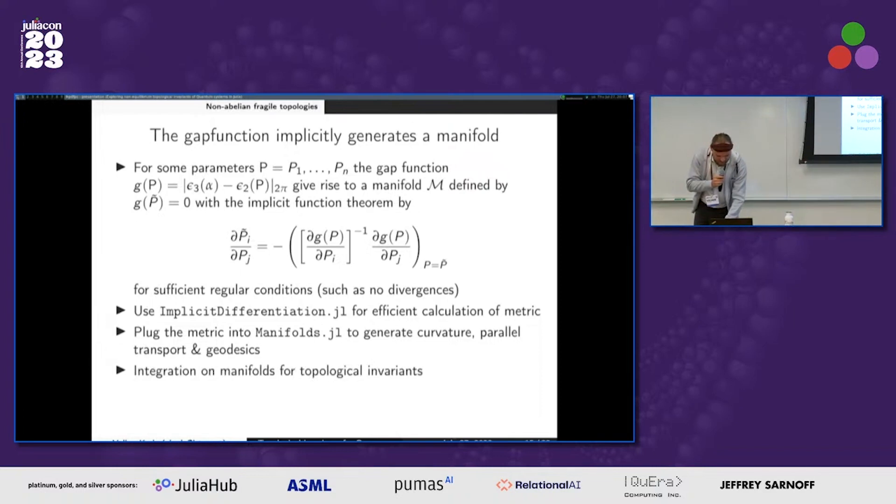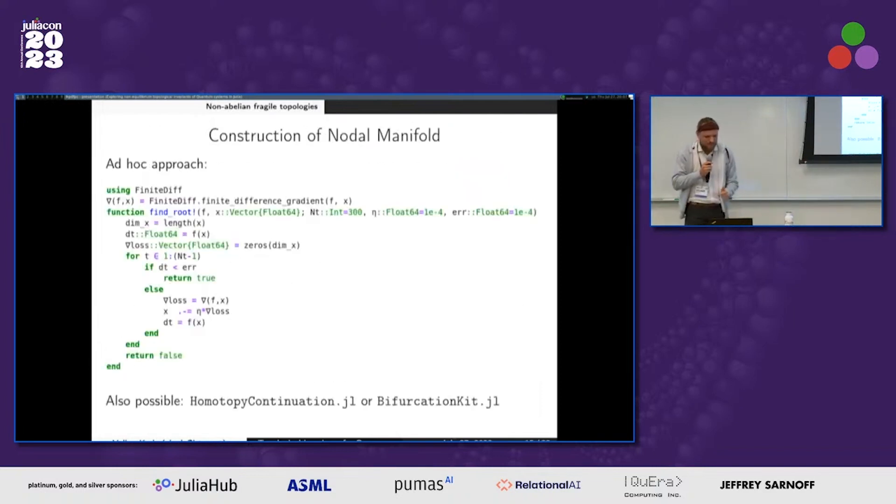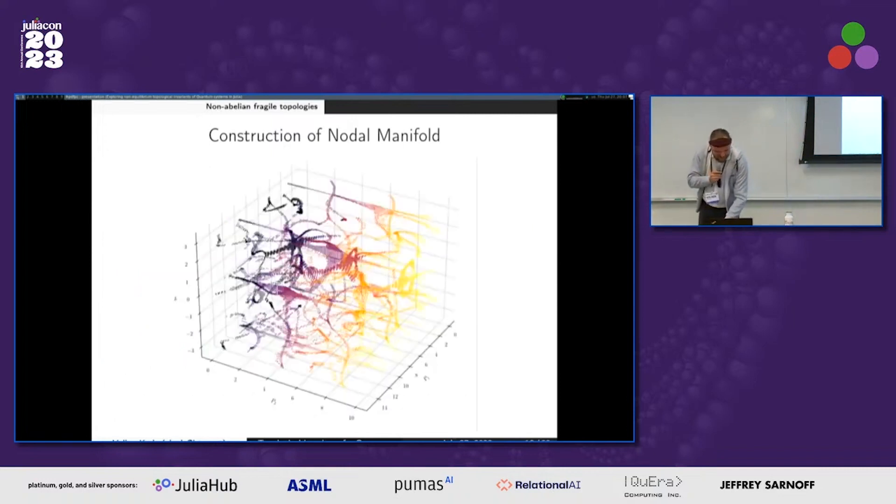And here I have a simple example. If you do not use this, how you could converge just using finite differences to this manifold. And it turns out, for real systems, this can be really complicated. This is everything which is colored here, is where the gap closes.